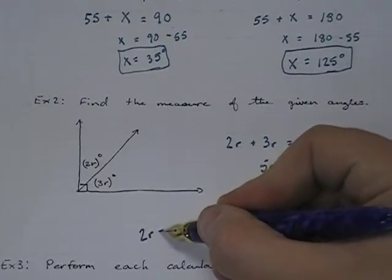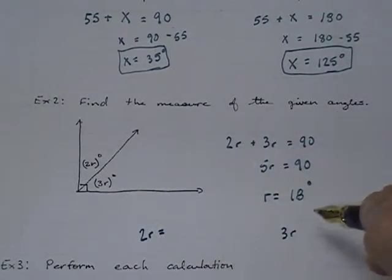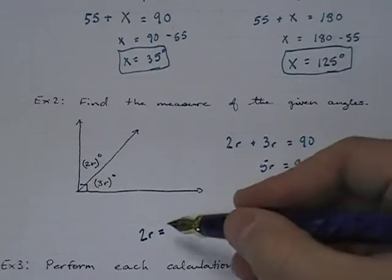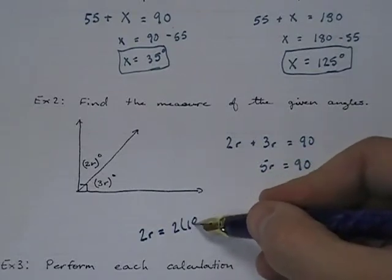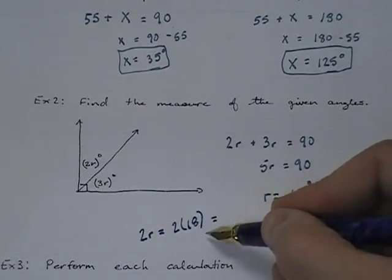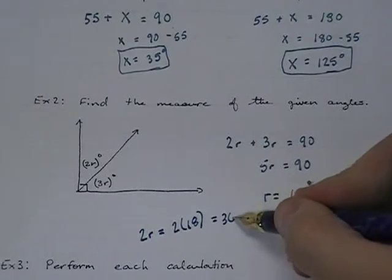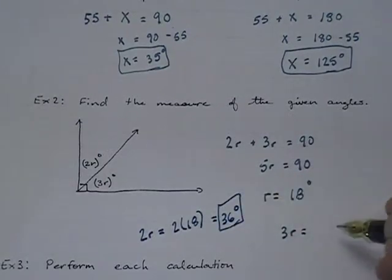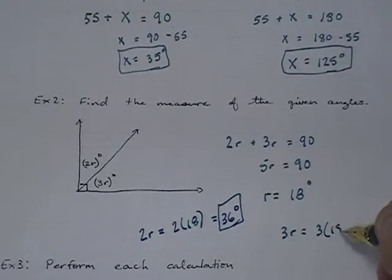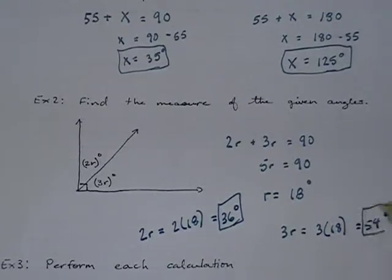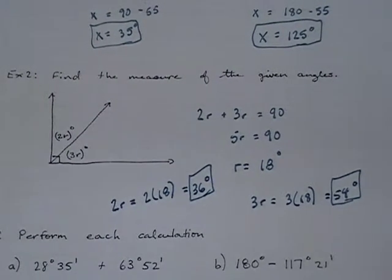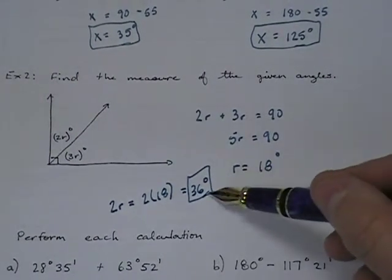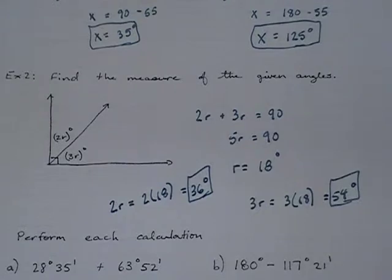Well, the two angles are 2r and 3r. Well, 2r is going to be 2 times 18, which is 36 degrees. And 3r is going to be 3 times 18, which is 54 degrees. So 36 and 54 degrees. So these are your actual final answers, 36 degrees and 54 degrees.